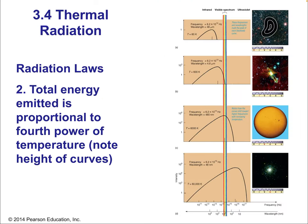Here are the radiation laws. Total energy emitted is proportional to the fourth power of temperature — there's a very strong relationship between energy and temperature. If I double the temperature, I have to raise that to the fourth power. Energy E is proportional to temperature to the fourth power. So a temperature of 100 Kelvin versus 200 Kelvin: 100 to the fourth power is 100 million, and 200 to the fourth power is 1.6 trillion — a huge difference in energy.